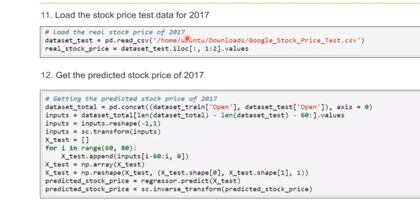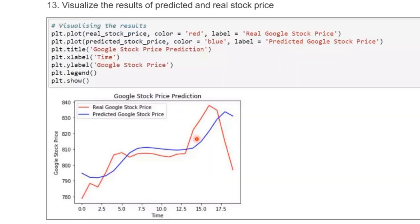Now load the stock price test data. We've predicted the stock price of 2017 within a particular range. Now plot the graph. The red color indicates the real Google stock price, and the blue indicates our predicted stock price.